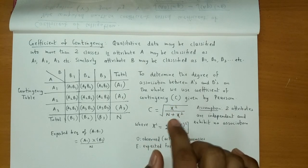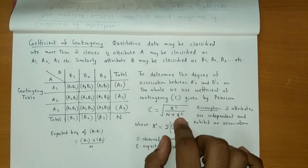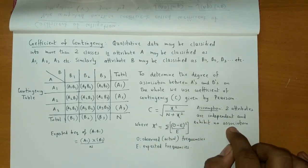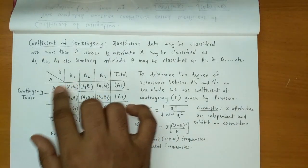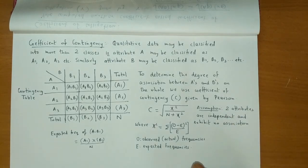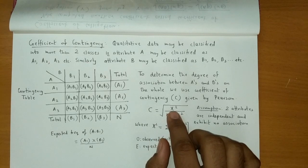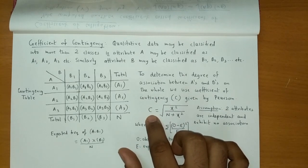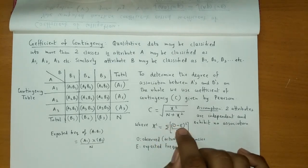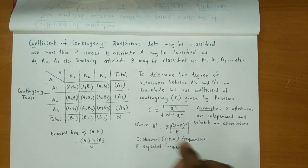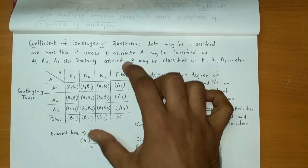Remember: C equals root of chi-square upon n plus chi-square. When applying this formula, one assumption must hold: the two attributes must be independent and exhibit no association. Chi-square is given by the summation of (O minus E) squared upon E, where O is the observed frequency — the actual frequencies given in the contingency table — and E represents the expected frequencies.